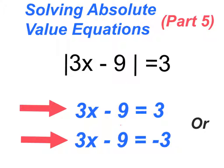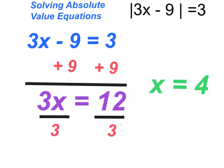Then we got to solve both of these solving the first one, adding nine to both sides and then dividing by three. We get X is equal to four.